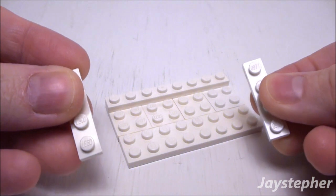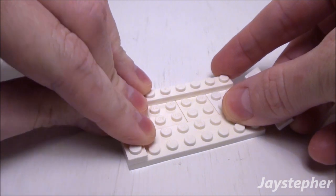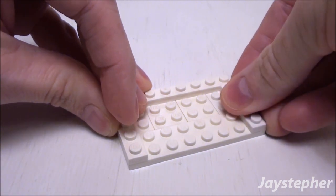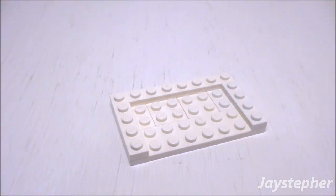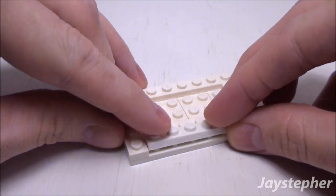Now place two 1 by 4 plates on the sides, one on the left and one on the right. Finally, a 1 by 6 plate on the bottom.